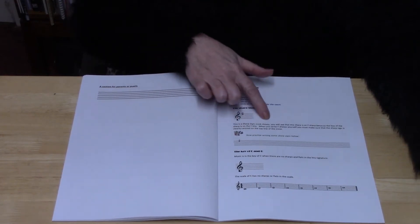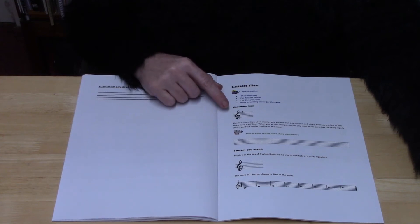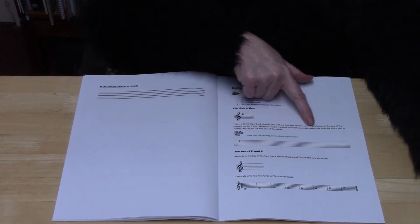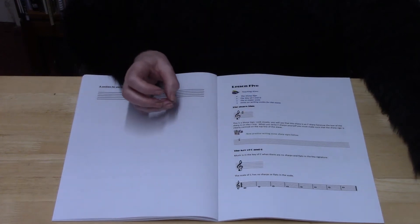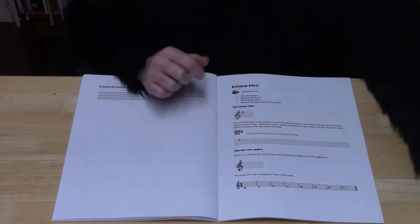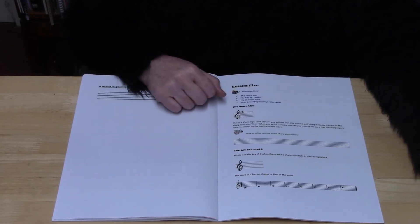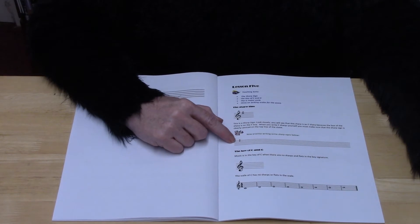So for the first time you're introduced to the sharp sign. The sharp sign, this one that you've got on this example is the F sharp because the little box is clearly seated on the F line in the treble clef. You're then told to try writing some of these sharp signs.